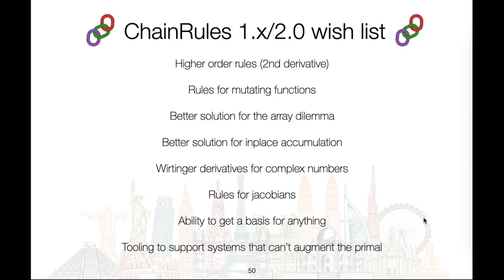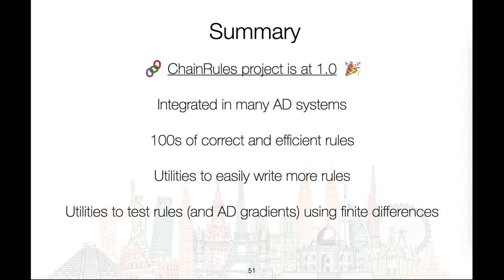Looking into the future, here's a list of things on our wishlist for future releases. We'd like to support higher order rules and rules for mutating functions, better solutions for the array dilemma and in-place accumulation, and more. It would be great if you get involved and help implement some of these. To summarize: ChainRules 1.0 is out, it is integrated in many AD systems, it has hundreds of correct and efficient rules, and it provides utilities to easily write and test rules using finite differences. I hope you found the talk useful and enjoy the rest of JuliaCon. Thank you.